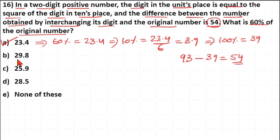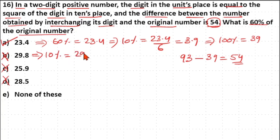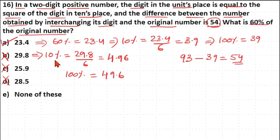For the other options — 29.8, 25.9, 28.5 — the unit digits are 8, 9, 5, which are not divisible by 6. For example, if 60% is 29.8, then 10% is 29.8 ÷ 6 = 4.96 and 100% is 49.6, which is a decimal and not a valid two-digit whole number. So options B, C, D are all wrong because they are not divisible by 6 and give decimal results.